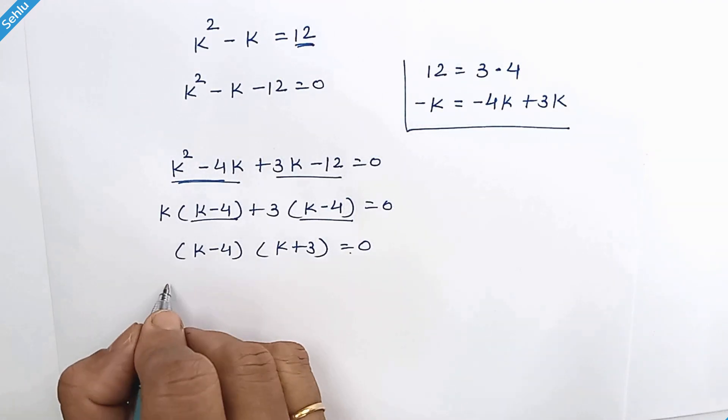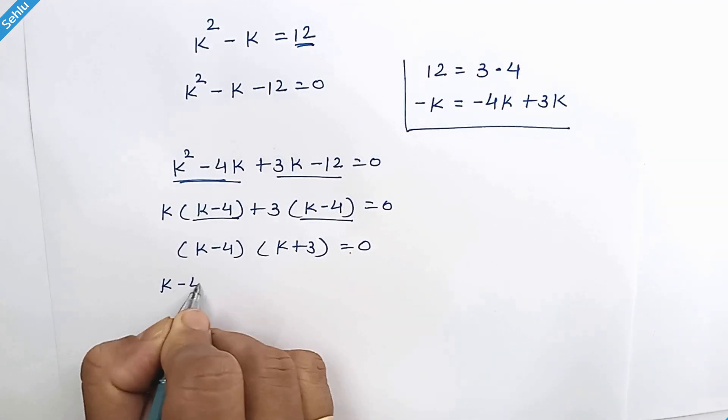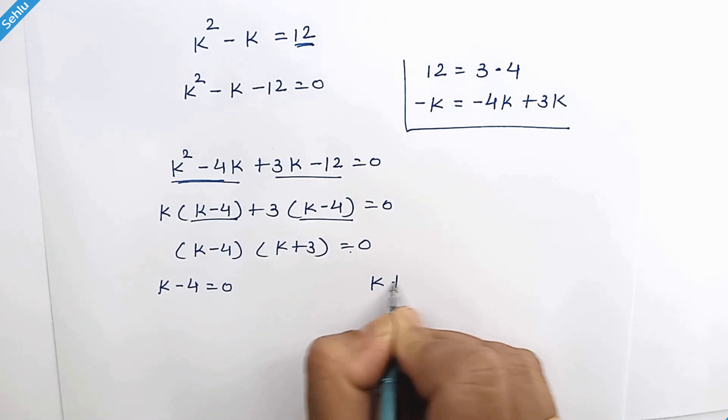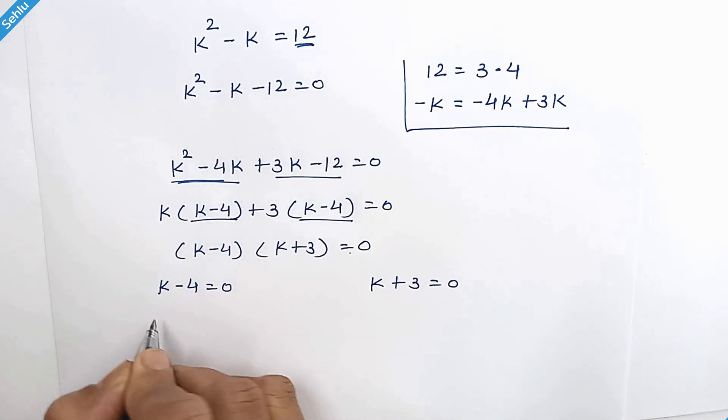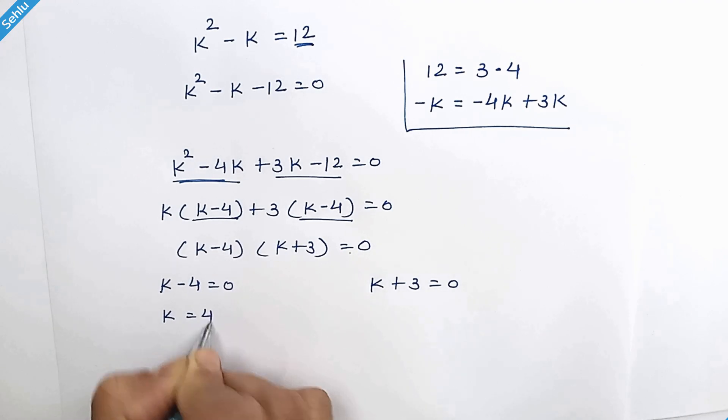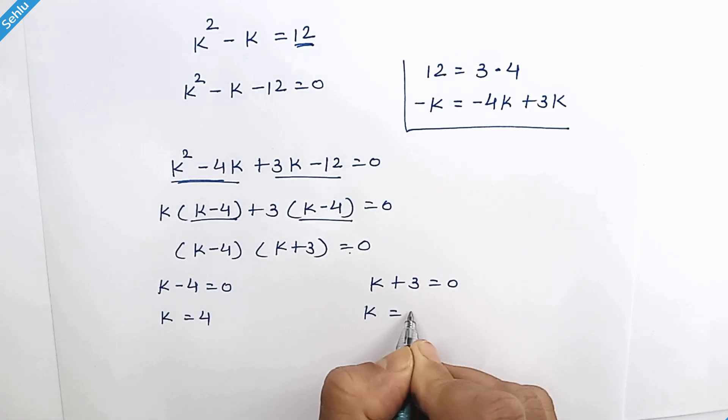So we have k minus 4 is equal to 0 or k plus 3 is equal to 0. So k is equal to 4 and k is equal to negative 3.